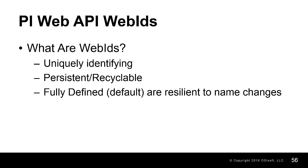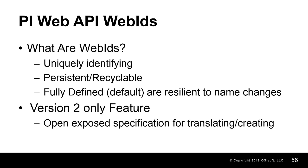Version 1 web IDs are opaque, which is to say that there is no publicly exposed way to back-translate these web IDs into their corresponding paths and GUIDs. Version 2 web IDs have a publicly exposed specification to build them, which we'll talk about in a separate video.